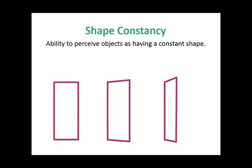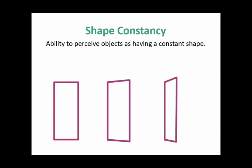Pretty cool what our brains can do. There's a show called Our Bleeped Up Brains implying our brains make mistakes. But is it a mistake for our brain to assume the rectangle stayed a rectangle? I don't think so. It's called our brain making correct assumptions about how the world works.